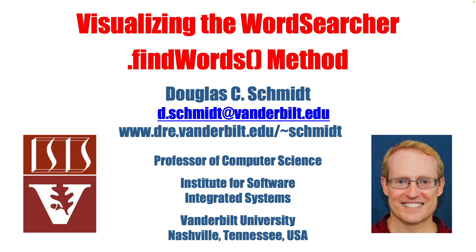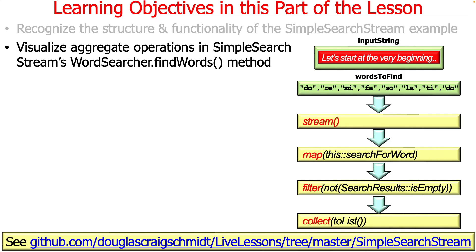Before we start jumping into looking at code, remember code is always ground truth — that's what's actually doing the work. We're going to visualize the way the findWords method works, just to give you a high-level perspective on what's happening under the hood. This will give you a chance to see the different pieces and how they play together and how they can be pipelined and connected to compose the processing steps in the stream.